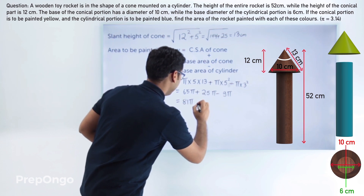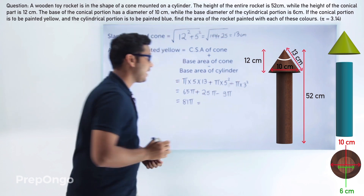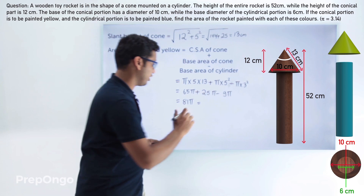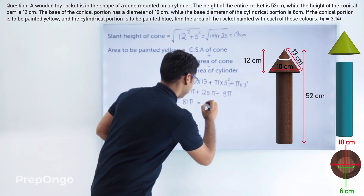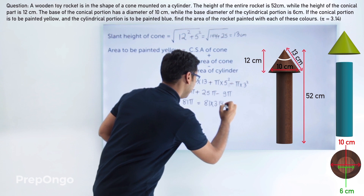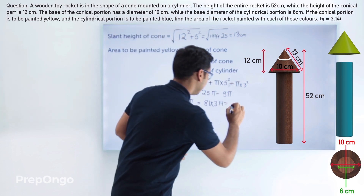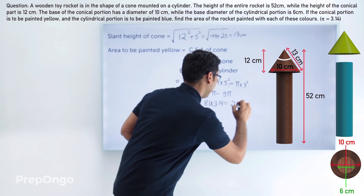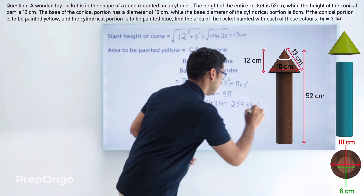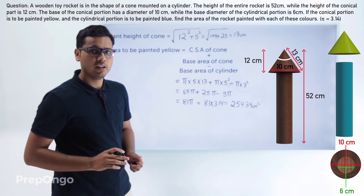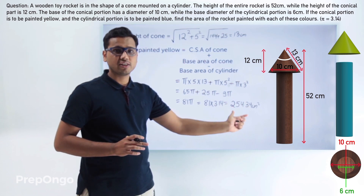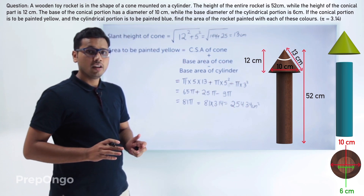Now let's put the value of π, which is given as 3.14. So this will be 81 × 3.14, which comes out to be 254.34 centimeters squared. You can try and calculate this value and you will get 254.34 centimeters squared.